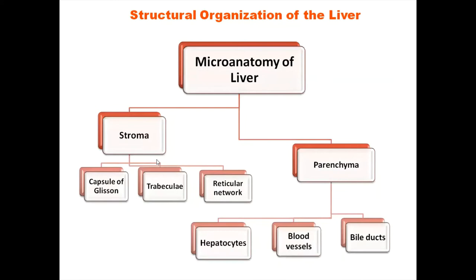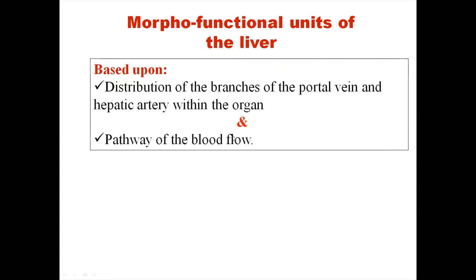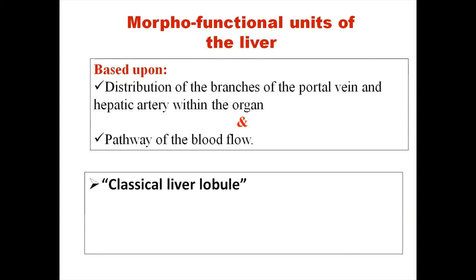If we take the tissue of the liver for processing and staining, we find that the morphofunctional unit is based upon the distribution of branches of the portal vein and hepatic artery within the organ and the pathway of blood flow. Theoretically, the units of the liver can be divided into three parts: the classical liver lobule, the portal lobule, and the liver acinus.